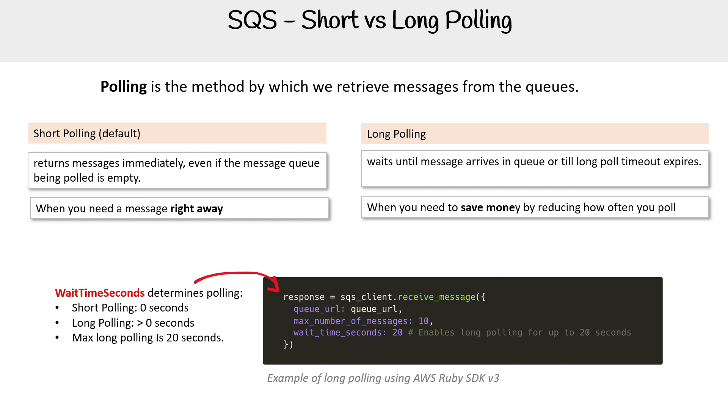Short polling is if wait time seconds is set to zero. If it's greater than zero, then you're using long polling. The maximum you can set for long polling is 20 seconds.